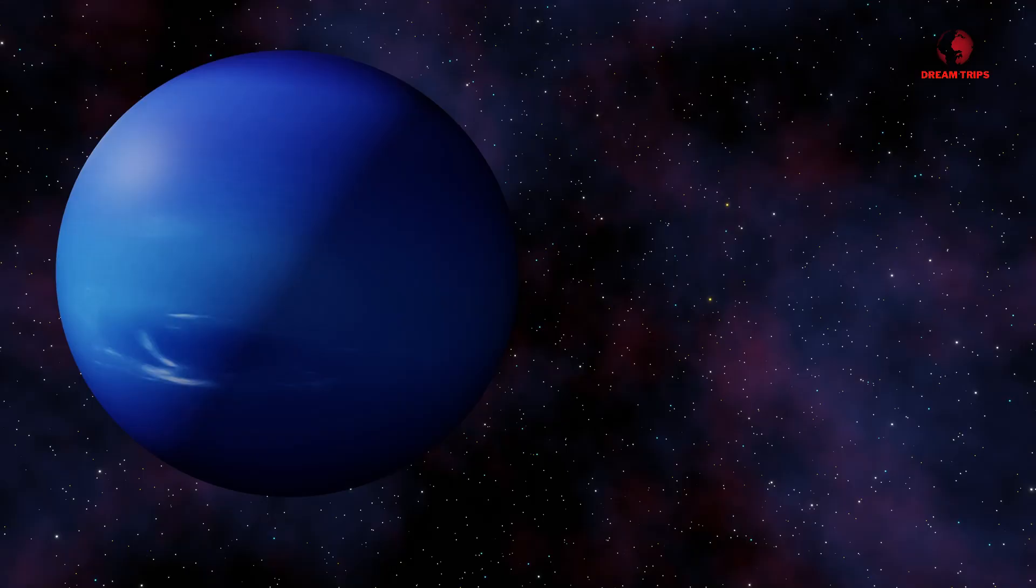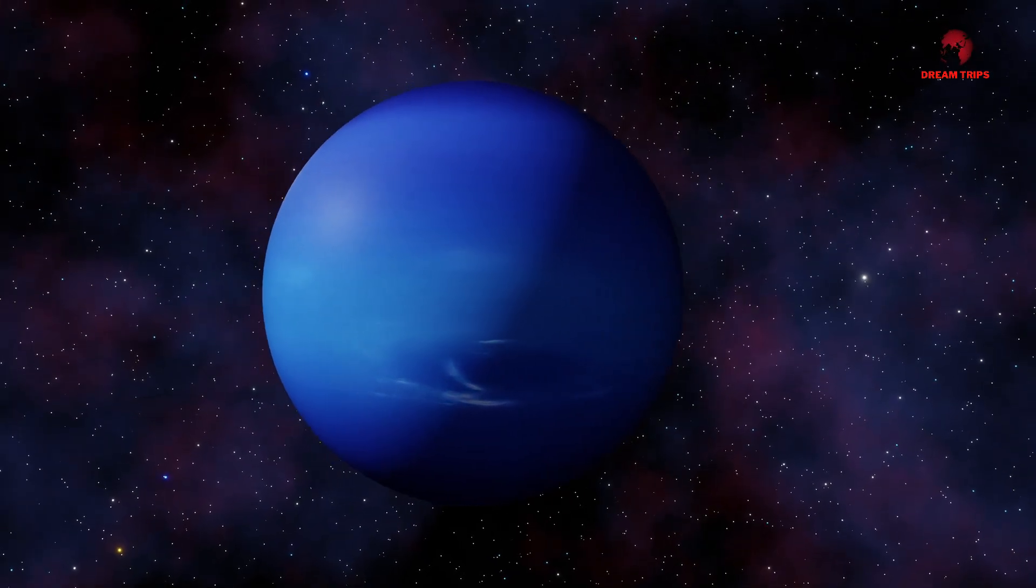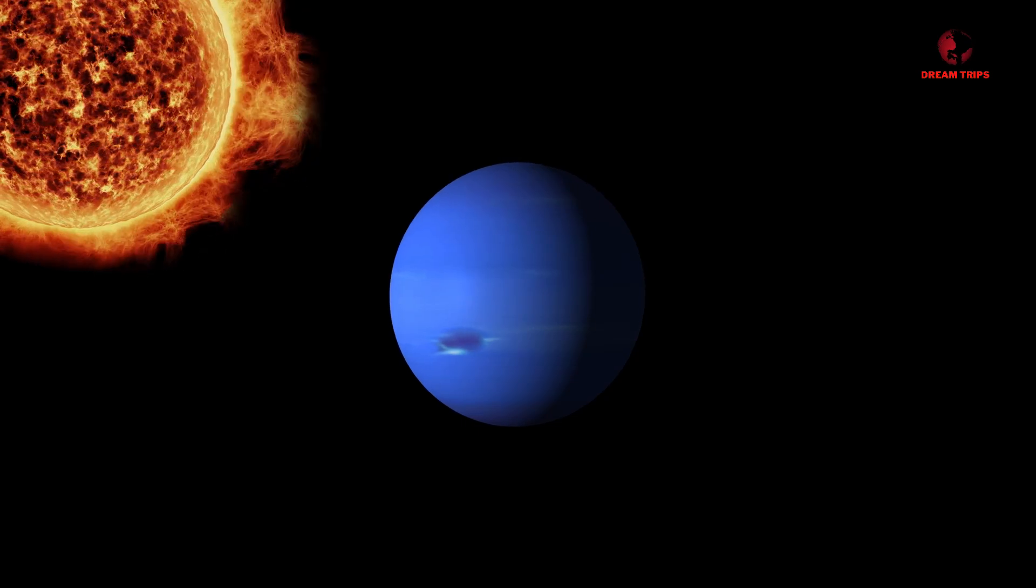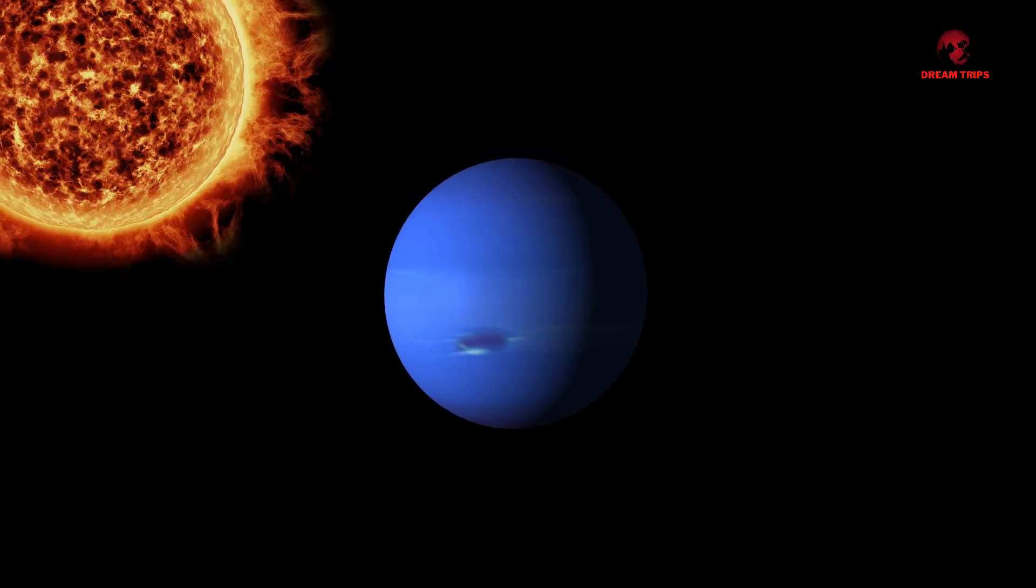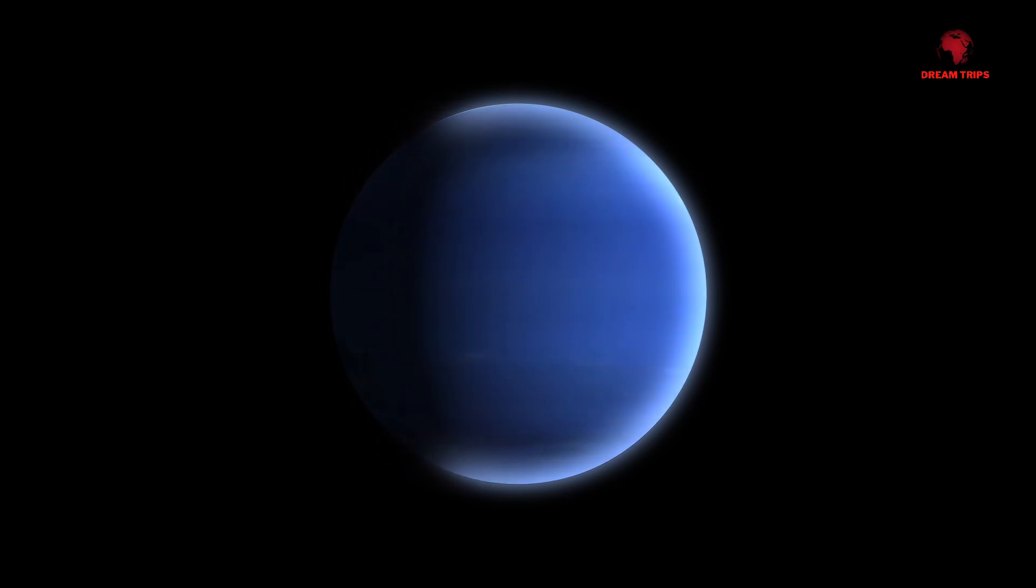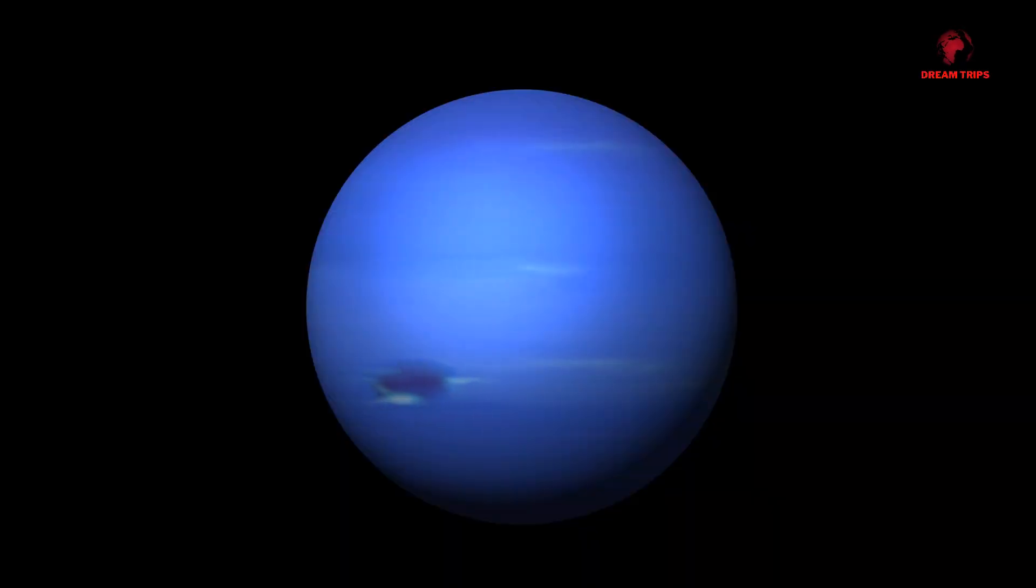But what was this terrifying discovery that had everyone on edge? Well, let's dive into the depths of this mystery. Our story begins with Neptune, the 8th and farthest known planet from the Sun in our solar system, a gas giant with a deep blue hue that's earned it the title of the Blue Giant. But Neptune, known for its tranquil appearance, was hiding a secret, a terrifying secret that would shake the very foundations of our understanding of the cosmos.